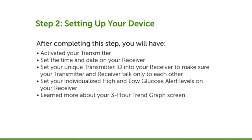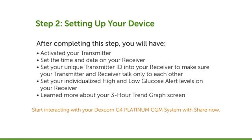It's time to focus on what you need to do to set up your Dexcom G4 Platinum receiver the first time you use your system. After completing this step, you will have activated your transmitter, set the time and date on your receiver, set your unique transmitter ID into your receiver to make sure your transmitter and receiver talk only to each other, set your individualized high and low glucose alert levels on your receiver, and learned more about your 3-hour trend graph screen, which is the home screen.